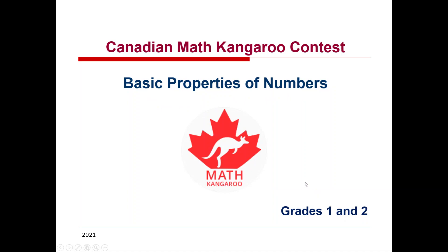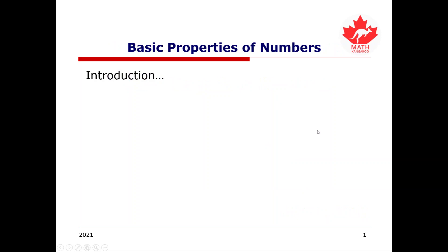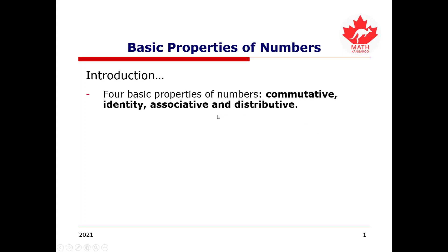When it comes to numbers, there are four basic properties that we can look at to understand how numbers work. We have the commutative property, the identity property, the associative property, and the distributive property. These basic properties are normally applied with addition and multiplication. So let's go over them.